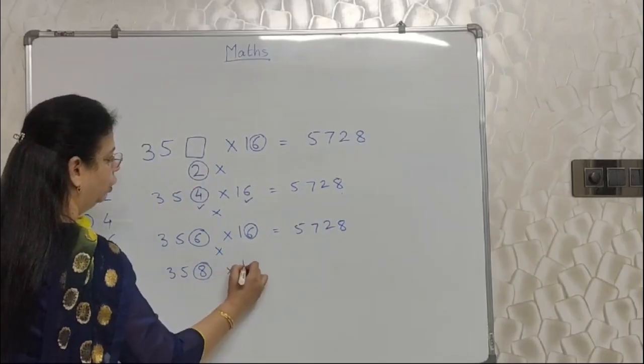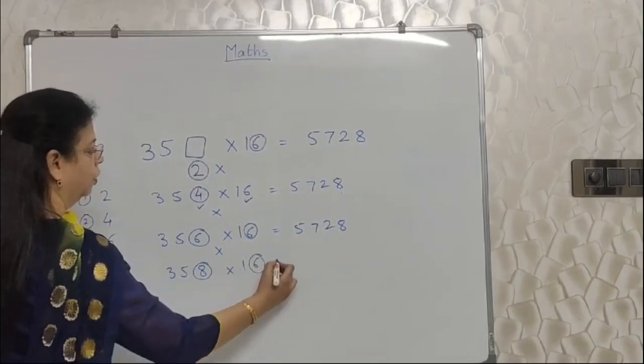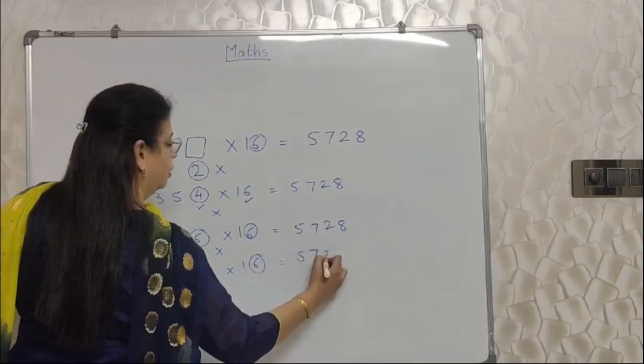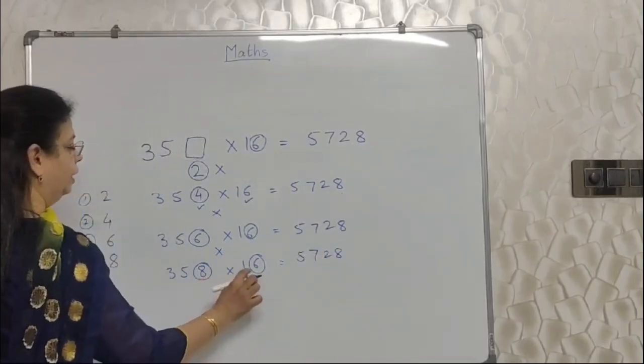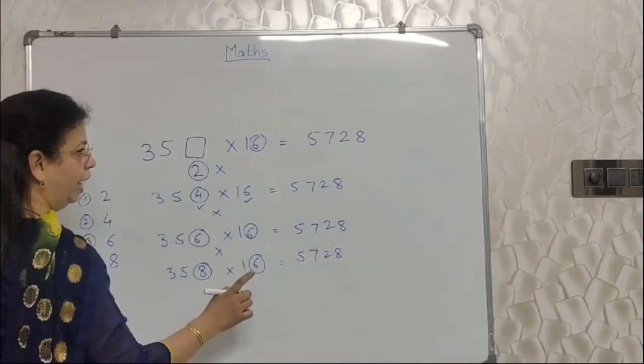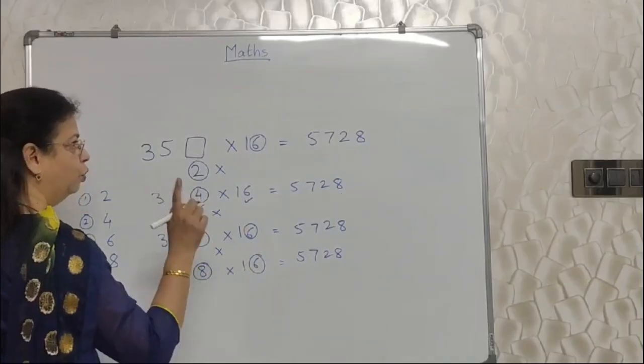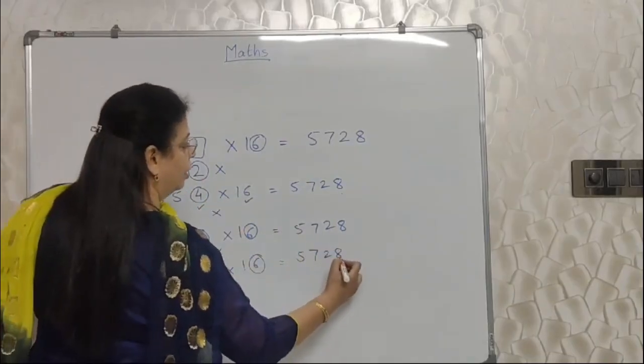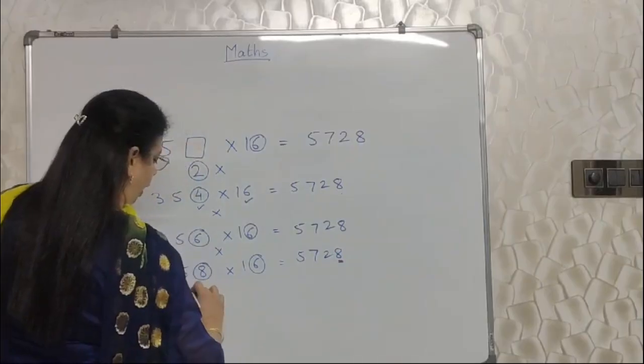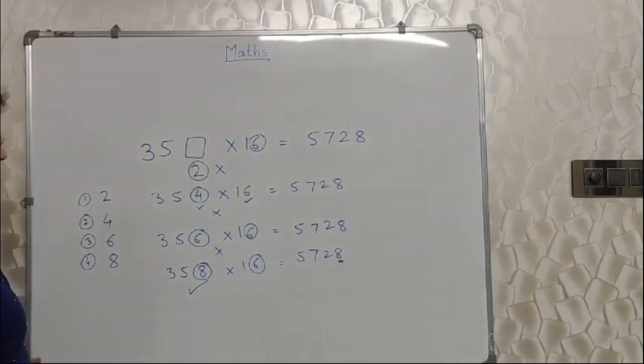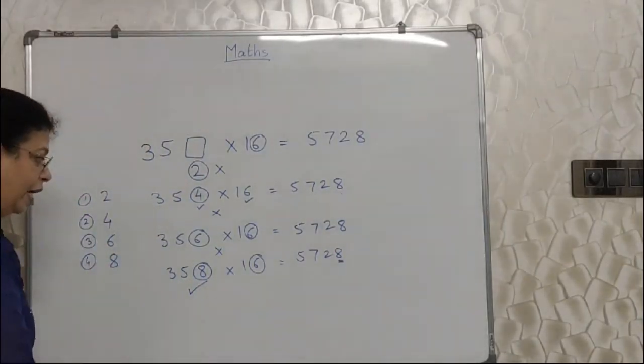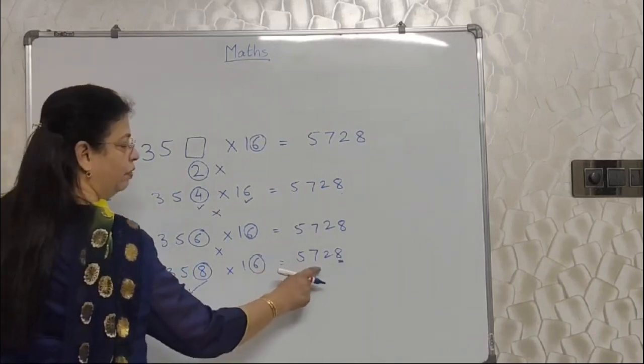So 358. Last one option. Into 16. Now see. 8, 6 are 48. 48 has unit space 8. Here it is 8. So 8 is the correct option.